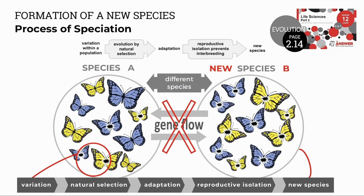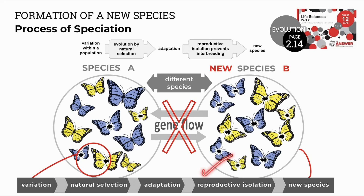The process of speciation begins with variation in a population. Natural selection in the process of evolution selects beneficial traits to enable adaptation of selected individuals. The group of best-adapted individuals is then reproductively isolated from the original species, which prevents interbreeding and results in the formation of a new species. Butterflies with a beneficial mutation are selected by natural selection as they're better adapted to survive, eventually forming new species B.